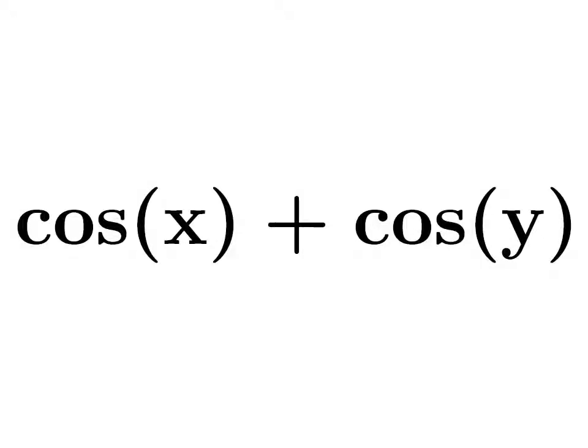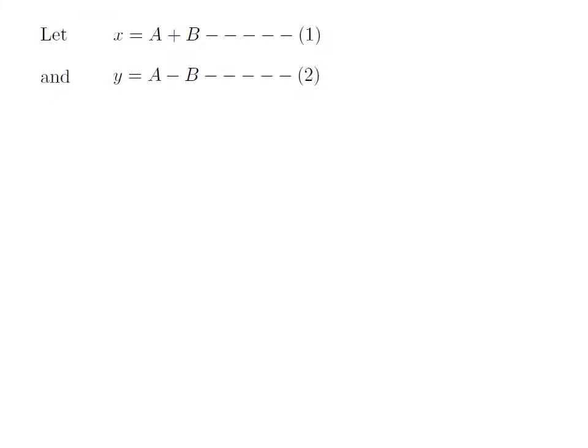In this video, we are going to learn how to derive the identity for cosine of x plus cosine of y. Let x is equal to a plus b and y is equal to a minus b, where a and b are real numbers. Let's give numbers to these two expressions 1 and 2 respectively.